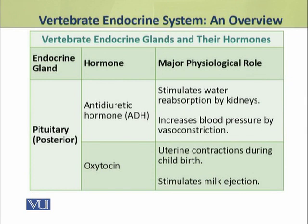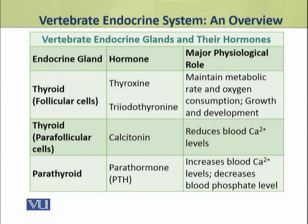Dear students, the posterior lobe of the pituitary gland also produces two hormones: anti-diuretic hormone and oxytocin. The next endocrine gland is the thyroid gland. The thyroid gland has two types of glandular cells: the follicular cells, which produce two hormones — thyroxine and triiodothyronine — while the parafollicular cells of the thyroid produce one hormone called calcitonin. The next endocrine gland is the parathyroid gland, which produces one hormone called parathormone.